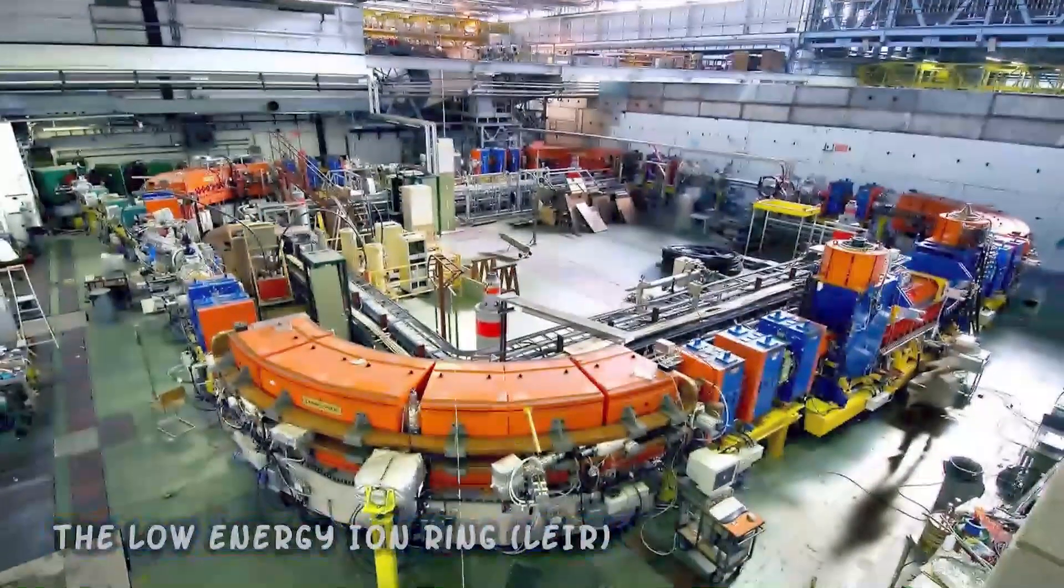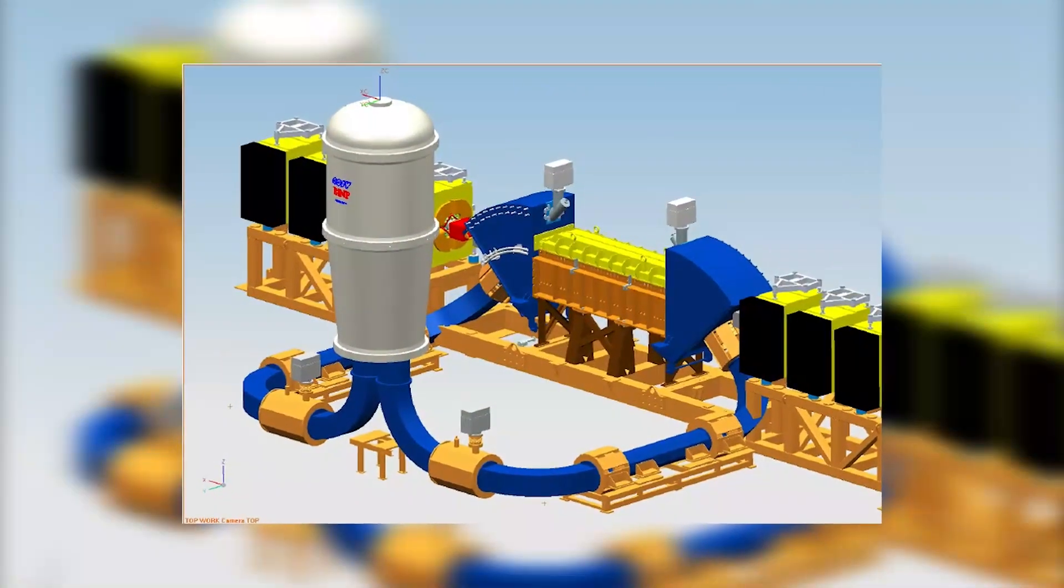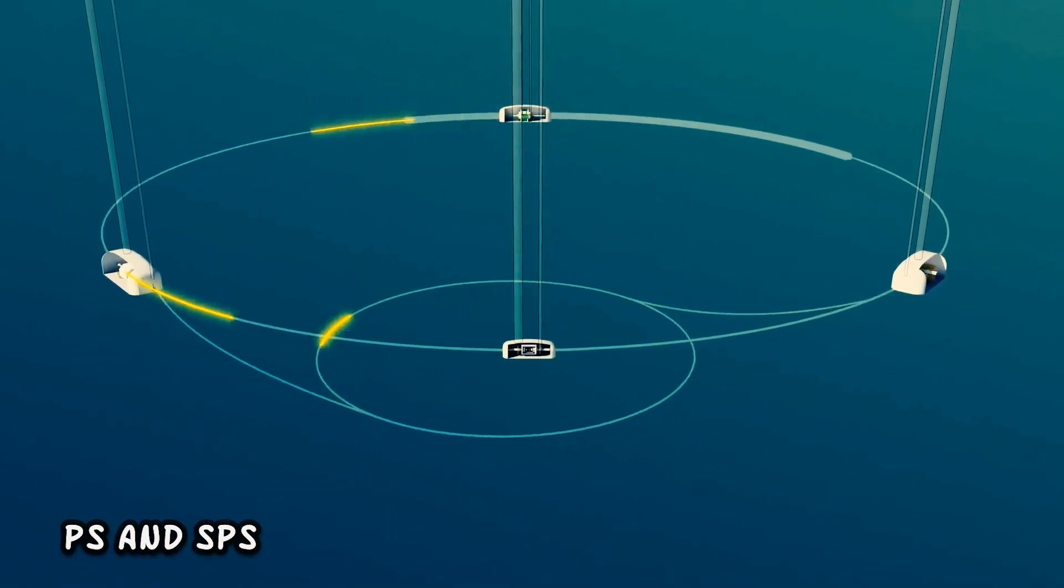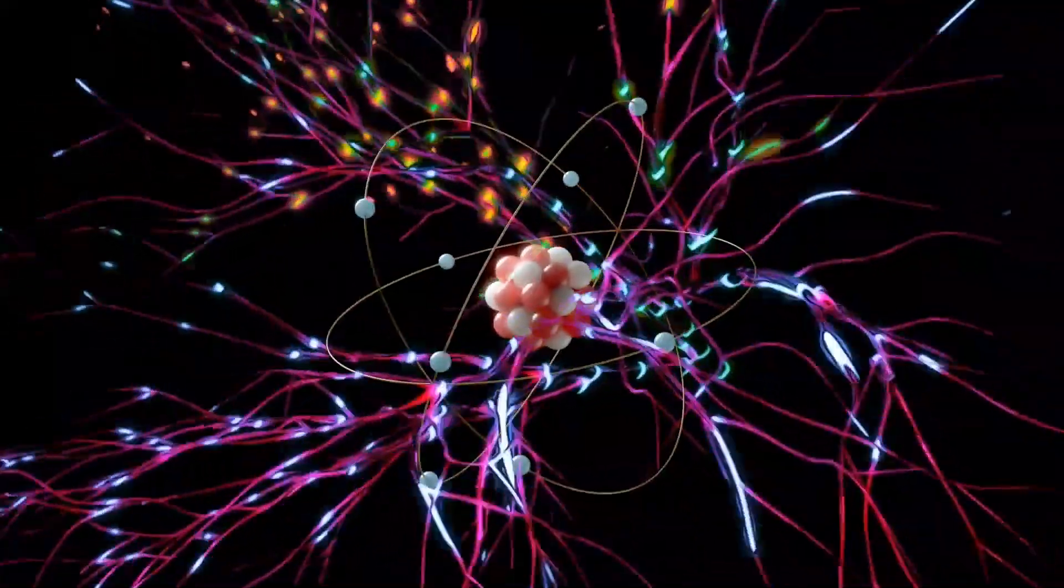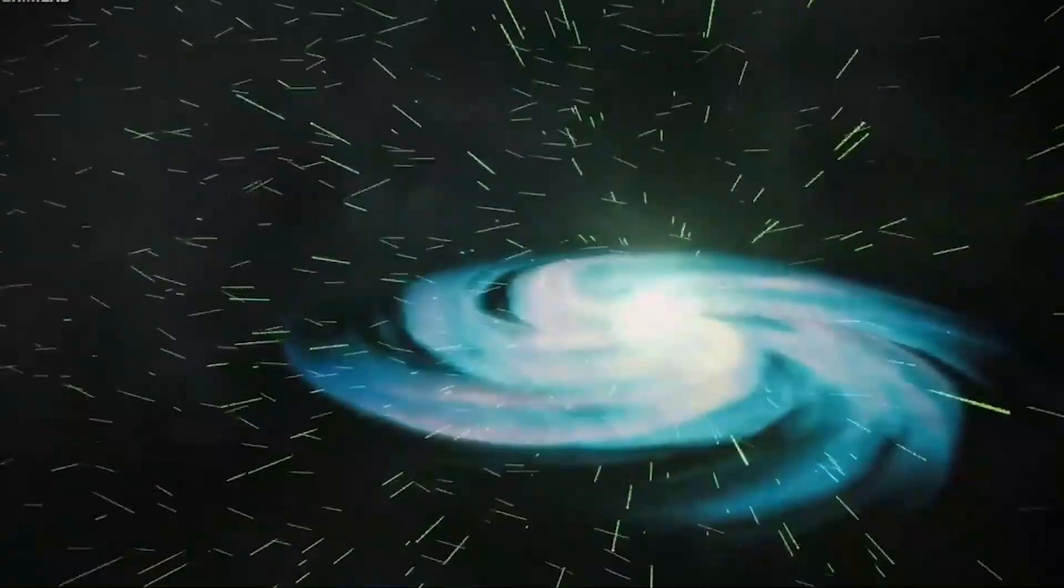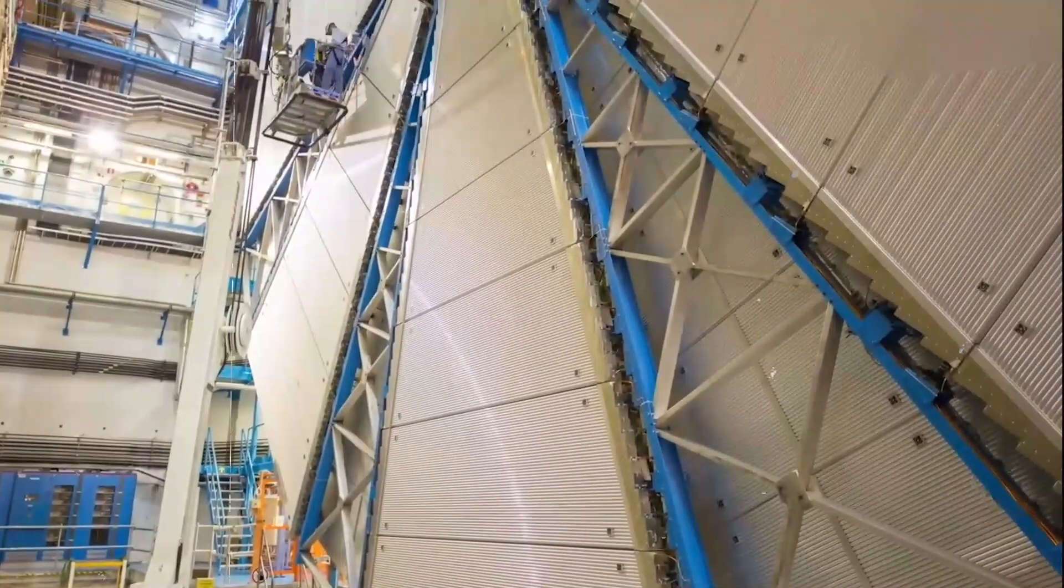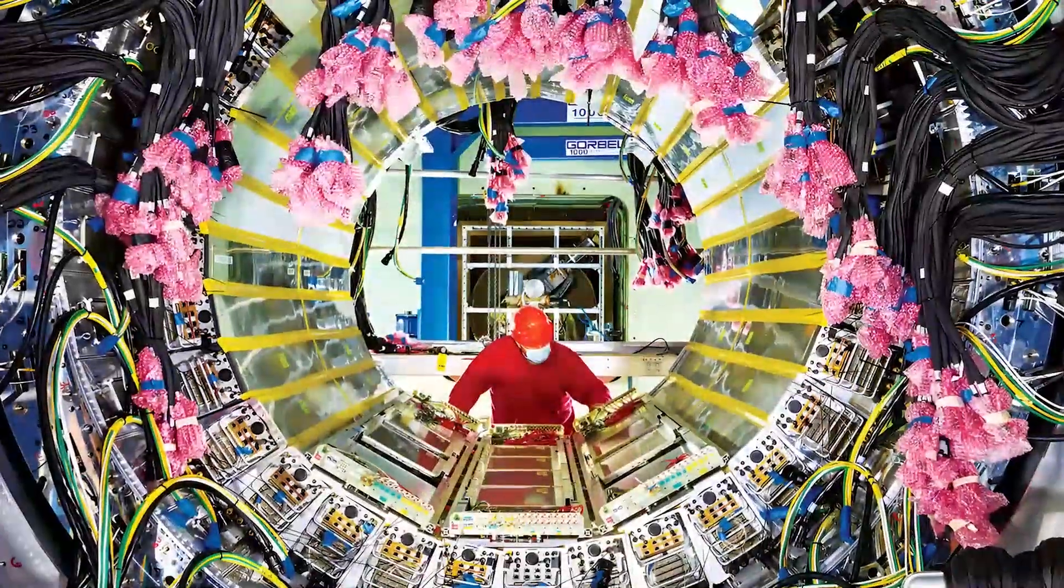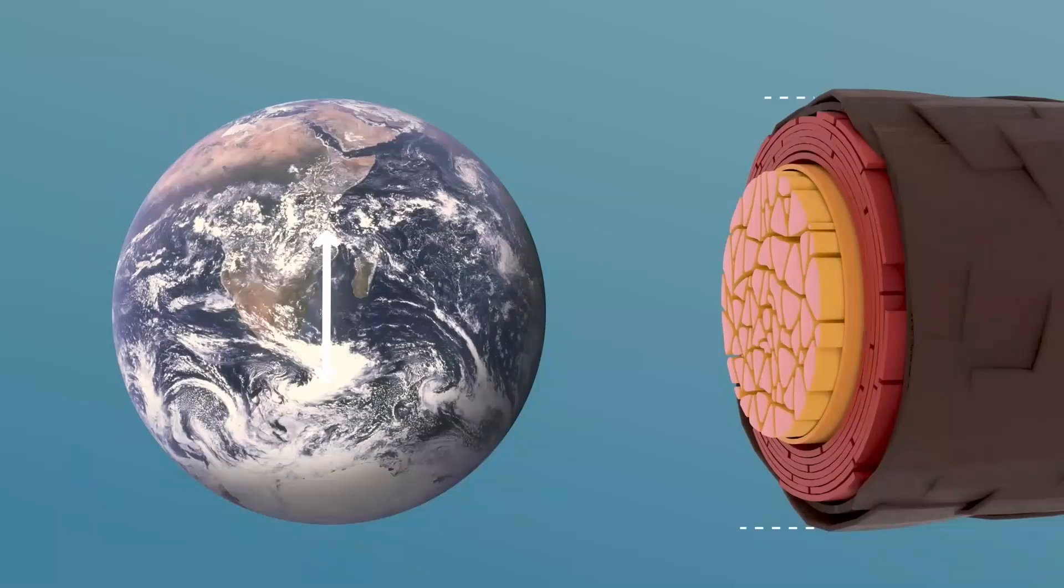The lead ions are first accelerated by the linear accelerator LINAC-3, and the low-energy ion ring (LEIR) is used as an ion storage and cooler unit. The ions are then further accelerated by the PS and SPS before being injected into the LHC ring, where they reach an energy of 2.3 tera electron volts per nucleon, or 522 tera electron volts per ion, higher than the energies reached by the relativistic heavy ion collider. The heavy ion program aims to investigate quark-gluon plasma, which existed in the early universe.